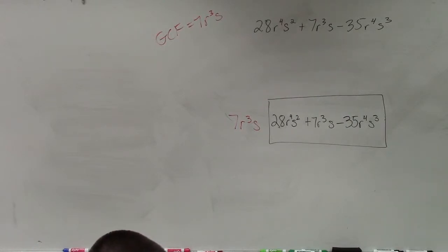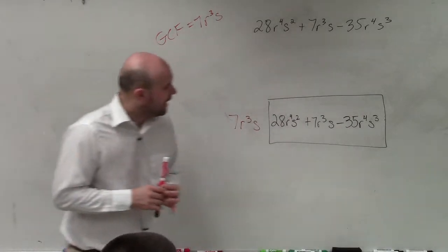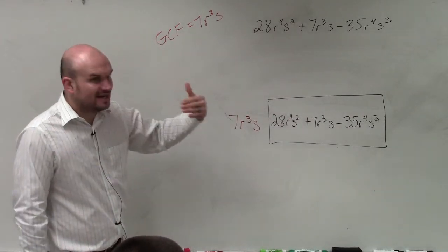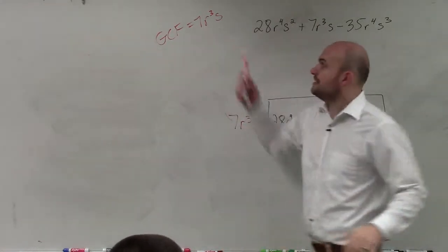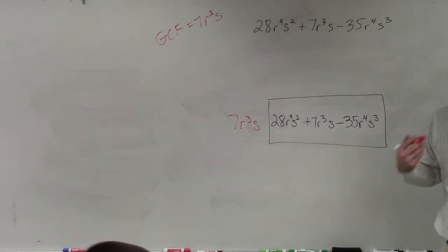All right. So ladies and gentlemen, when we have Vanessa looking at this problem here, basically again, another kind of tip. What we identified is of this polynomial, our greatest common factor was 7r cubed s.